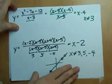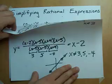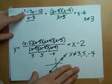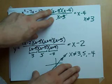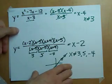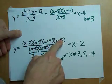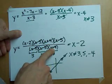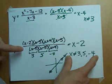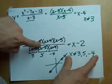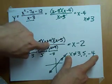Simplifying rational expressions is as simple as ensuring that your numerator and denominator are fully factored, cancelling out terms that appear in both the top and bottom, and stating your restrictions based on what numbers of x would make factors in your denominator equal 0.